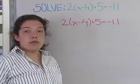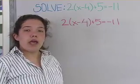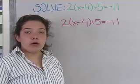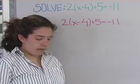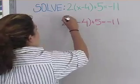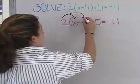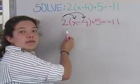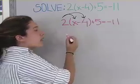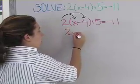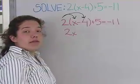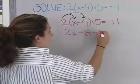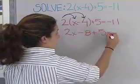We're going to solve the equation 2 times the quantity x minus 4, plus 5, equals negative 11. First, distribute the 2 across x minus 4. 2 times x is 2x, and 2 times negative 4 is negative 8. So we have 2x minus 8 plus 5 equals negative 11.